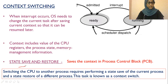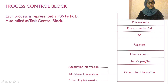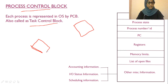When context switching happens, the process's state is saved in the Process Control Block (PCB), also called the Task Control Block. PCB is a data structure that stores all information about a process. Every process in the system has its own PCB, so if there are 1 million processes, there are 1 million PCBs.